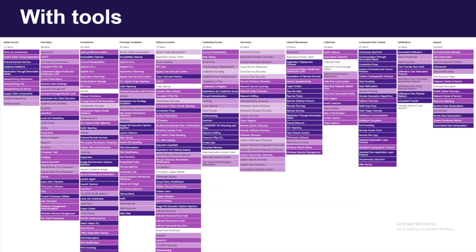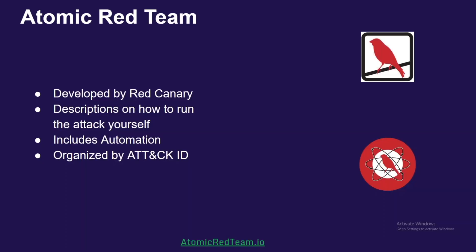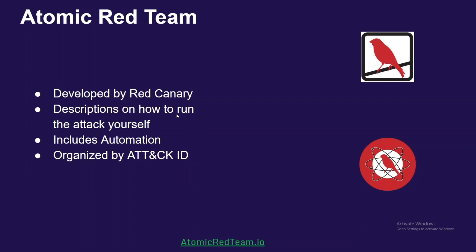This all leads back to detections. If you're logging, fine — but how are you sure you're actually detecting what your detection file says? I used Atomic Red Team in order to verify all those detections I wrote in the detection file. Atomic Red Team is super easy to use, developed by Red Canary, organized by ATT&CK ID, and the best part is it's automatable — it has PowerShell, Ruby, and Python. You give it an attack ID — in this example, remote file copy — and choose which type of attack to run. I like using the YAML file that the automation uses. I tried to run all the attacks by hand myself so I could understand how they actually work and perform, and I learned a lot on both sides.